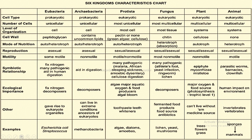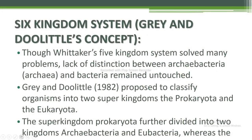Examples of each kingdom: Eubacteria — Escherichia coli (E. coli) and Streptococcus; Archaebacteria — Methanobacteria; Protista — algae, diatoms, and amoebas; Fungi — lichen, yeast, and mushrooms; Plant — trees, flowers, and grasses; Animal — sponges, mammals, etc.